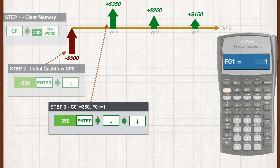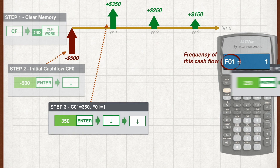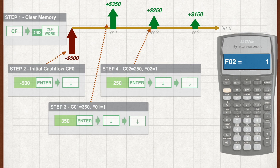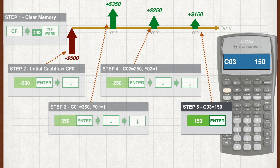Now you see F01 on your calculator. F stands for frequency — it's asking you how many time periods this cash flow is repeated. Since this cash flow is not repeated, we simply leave it as 1 and press the down arrow key again to move on. In step four, the cash flow is $250, so we key in 250 for CO2 and press enter to save it. Press the down arrow key twice to move to the next cash flow. For the final cash flow, simply key in 150 for CO3 and hit enter.